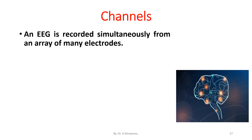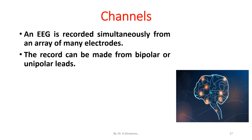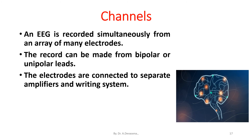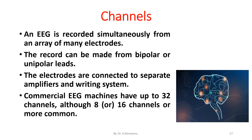The record can be made from bipolar or monopolar leads. The electrodes are connected to separate amplifiers and writing systems. Commercial EEG machines have up to 32 channels, although 8 or 16 channels are more common.